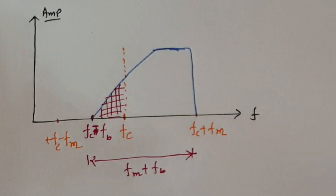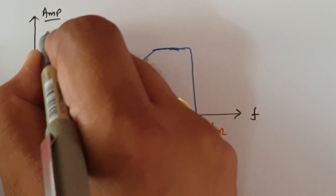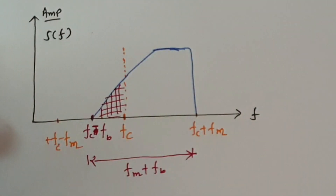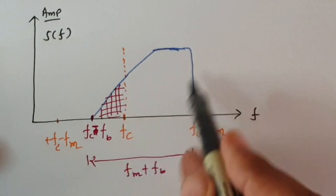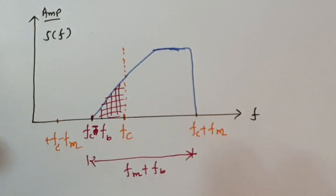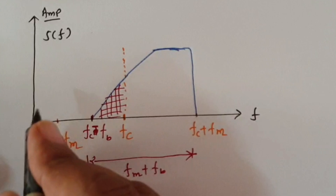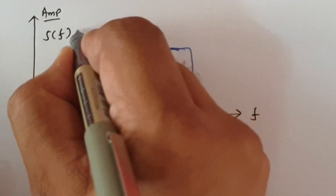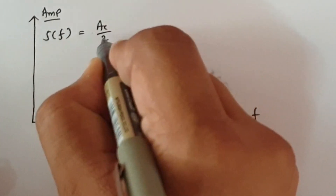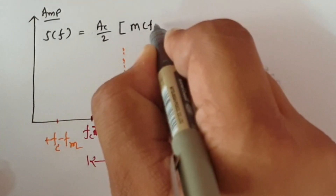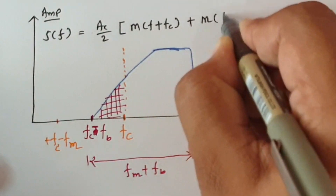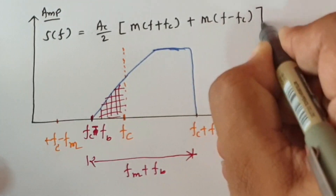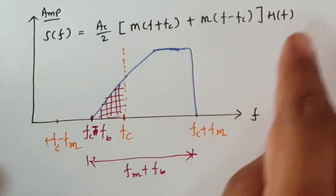If this is my signal S(F), then S(F) has both the FC plus F and FC minus F components of the modulating signal. If I write this modulated signal in terms of frequency FC, then that will be: S(F) = (AC/2) × [M(F + FC) + M(F − FC)] × H(F). This is what the response at the modulated signal looks like.